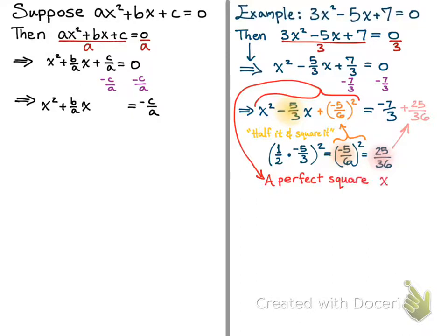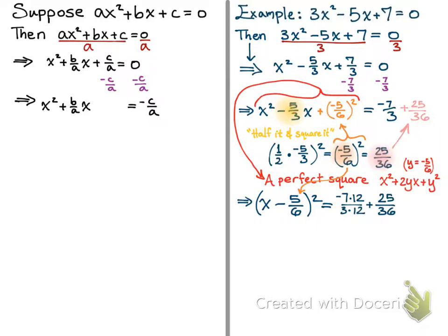Now the left-hand side of the equation is a perfect square — it's of the form x squared plus 2yx plus y squared, where y equals negative 5 sixths. This implies that (x minus 5 sixths) squared equals negative 7 times 12 over 3 times 12 plus 25 over 36, where we are finding a common denominator on the right-hand side.